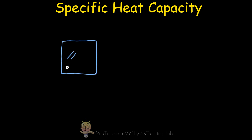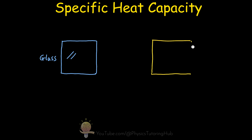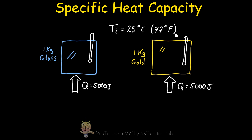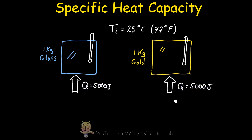Imagine we have two blocks that weigh one kilogram each. One block is made of glass and the other block is made of gold. Both of these blocks are at the same temperature at 25 degrees Celsius, and we decide to heat both substances by the same amount — transferring 5,000 joules of heat energy into both materials at the same time. Would the temperature of both of these materials rise by the same amount?